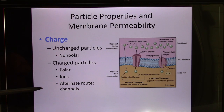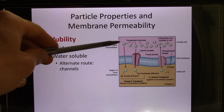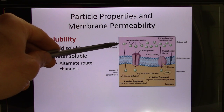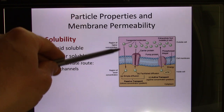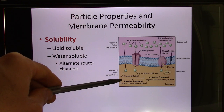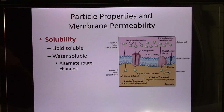So charged particles need a helper — and that's the ion channel. The third factor is lipid solubility. If a molecule is lipid or lipid-soluble, and the cell membrane is made of phospholipid which is a lipid, it can easily go through the cell membrane. If not, they need to find some helper or they cannot go through the cell membrane.